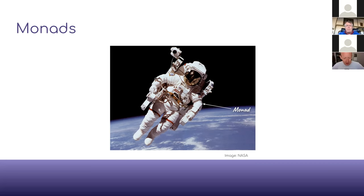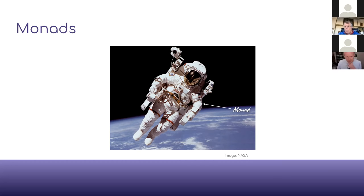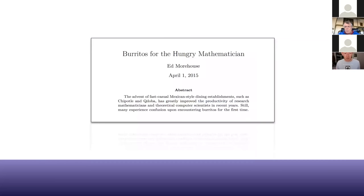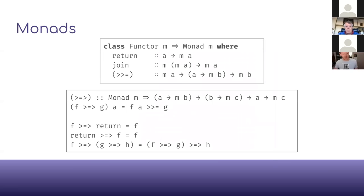I want to talk about an intuition for comonads, but first I'll talk about an intuition for monads. Everybody has their own intuition for monads — you pick it up early in Haskell and PureScript development. Fewer people have a good intuition for comonads, and it took me a really long time to get one. This UI stuff was my way into understanding comonads properly. People have all sorts of metaphors for monads — like spacesuits, or burritos — there's even a paper that teaches you about burritos if you know about monads.